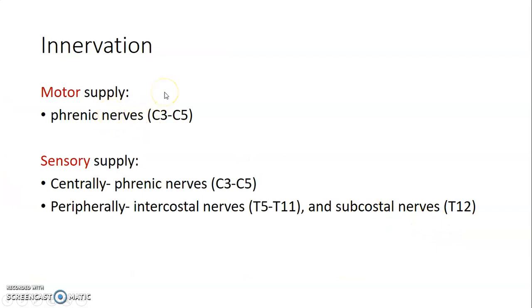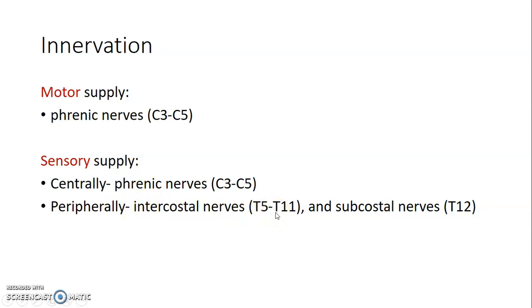The innervation of the diaphragm: motor supply is by the phrenic nerve, with root value C3 to C5. Sensory supply to the central part is also by the phrenic nerve, while the periphery is supplied by intercostal nerves (roots T5 to T11) and the subcostal nerve (root value T12).